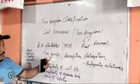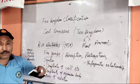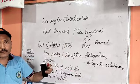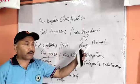Every plant and animal has a complex cell structure. The second basis is the complexity of the organism's body.